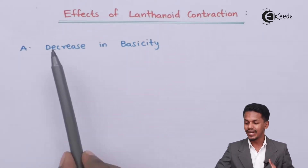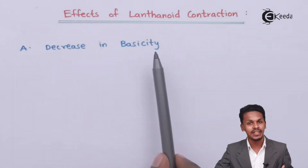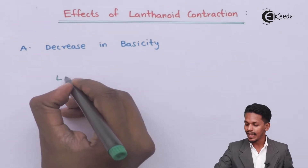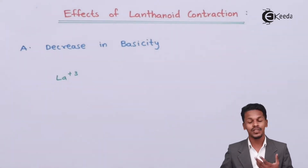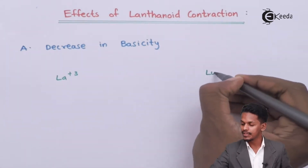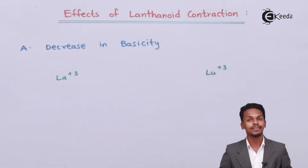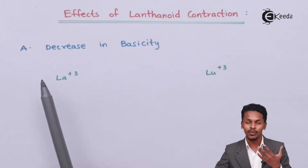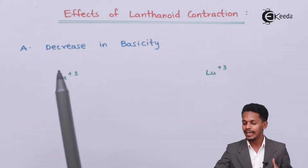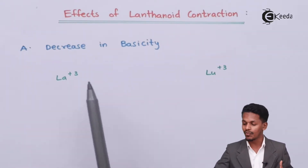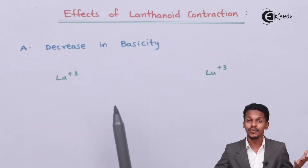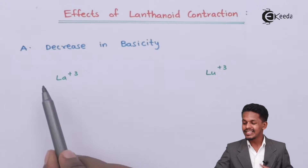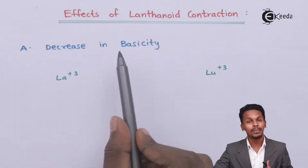Starting with the first effect: there is a decrease in basicity. For example, if we talk about lanthanum, that is La³⁺, and lutetium, that is Lu³⁺. In the previous topic we discussed there is an atomic size decrease of 10 pm and an ionic size difference as well. Now let us understand the effect of lanthanide contraction on basicity.